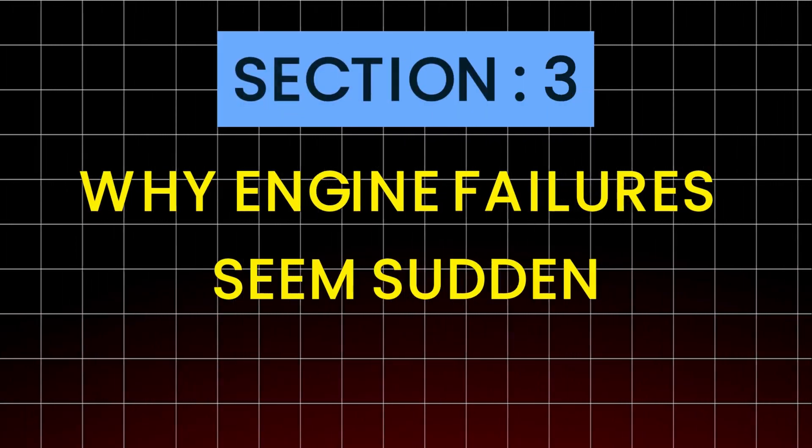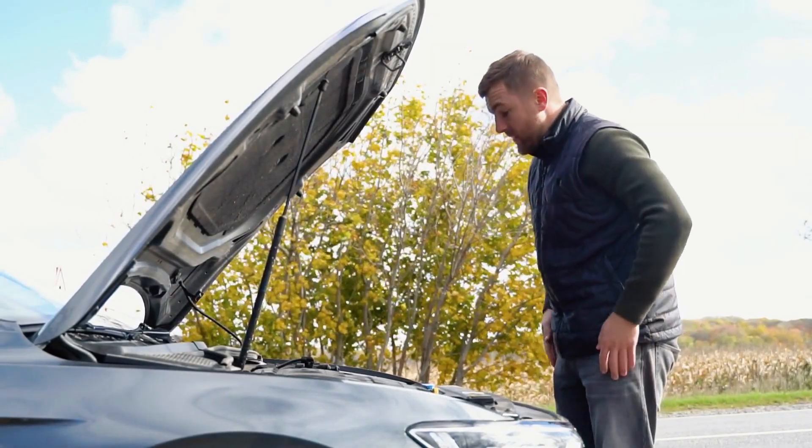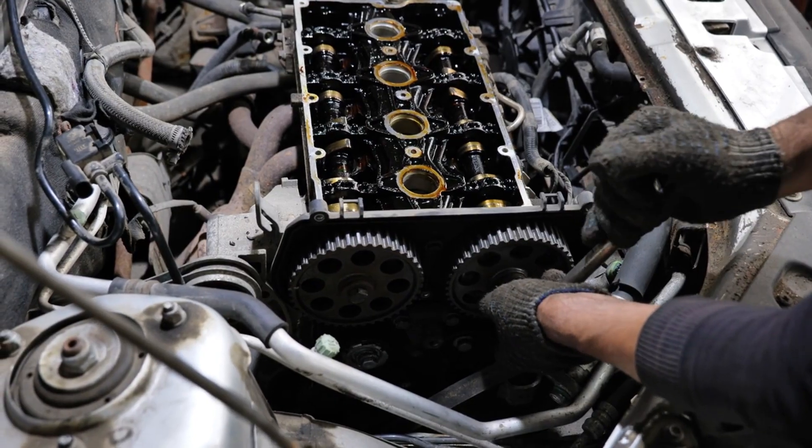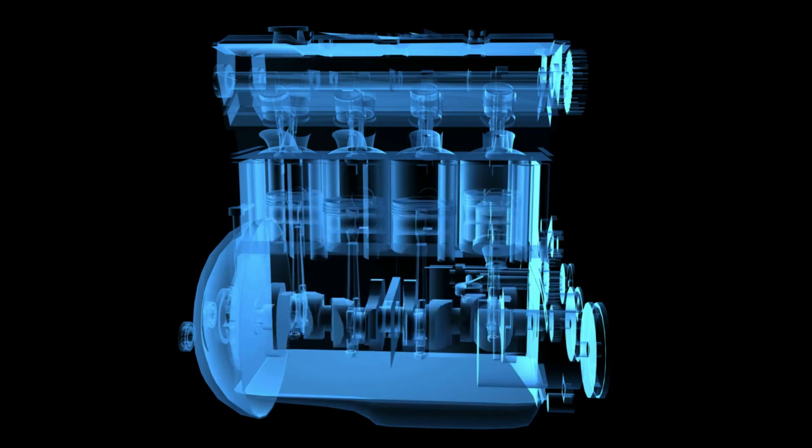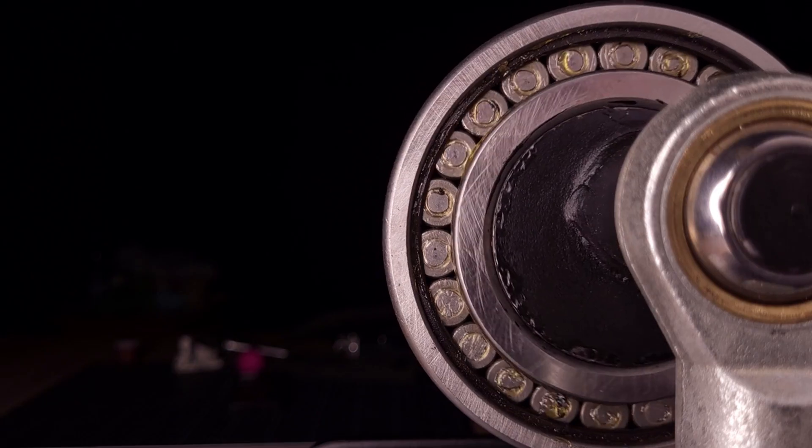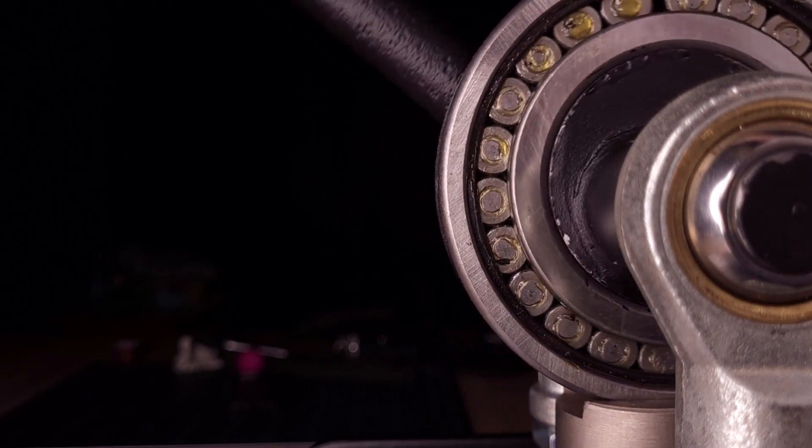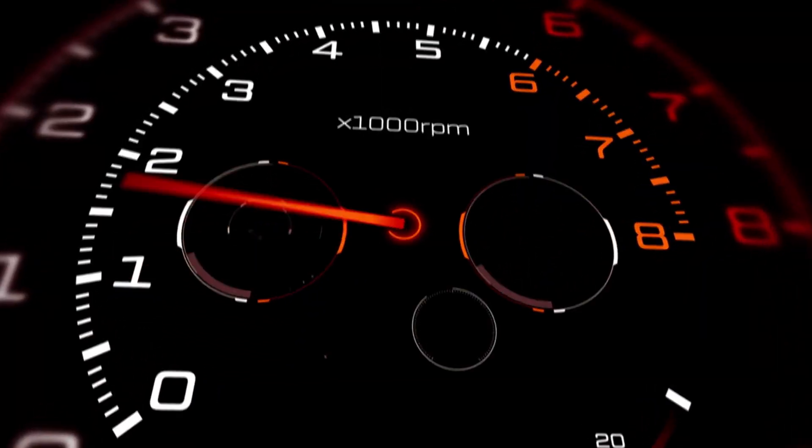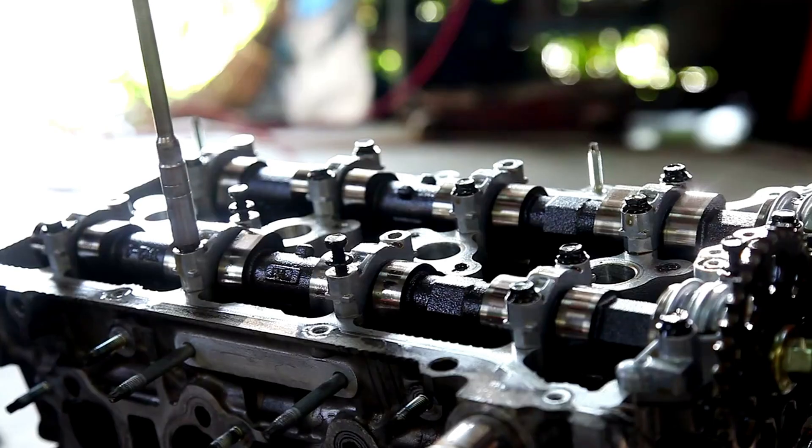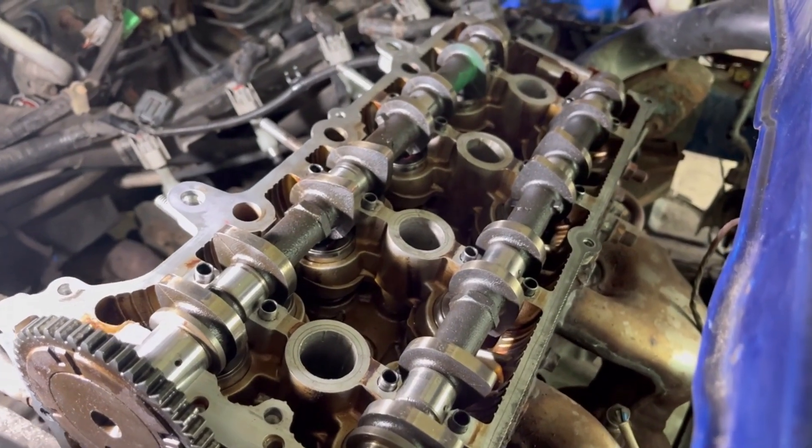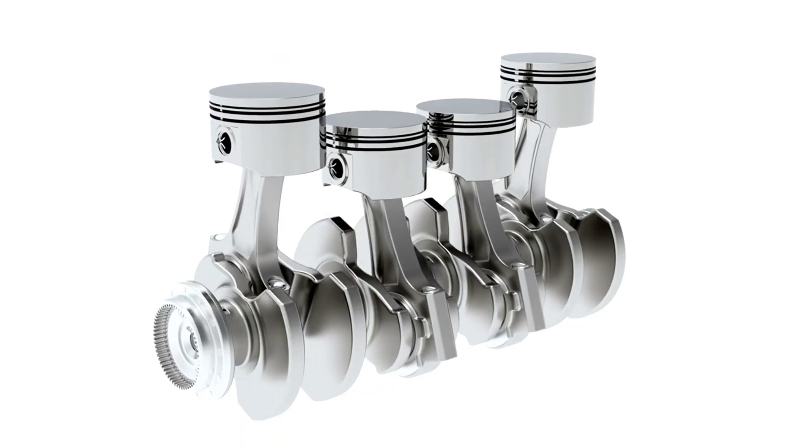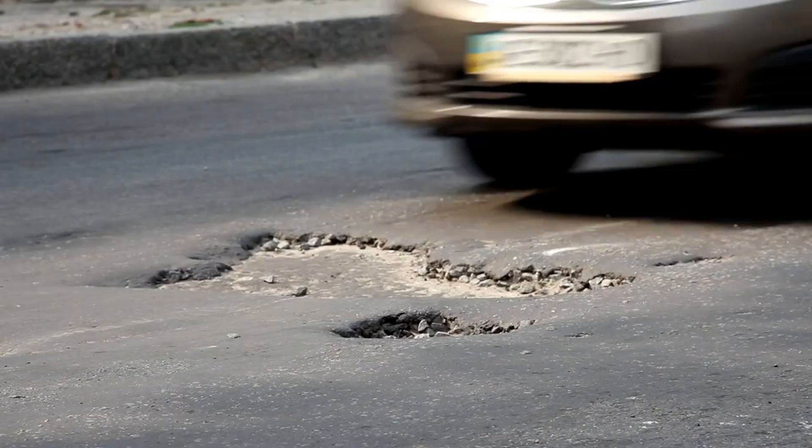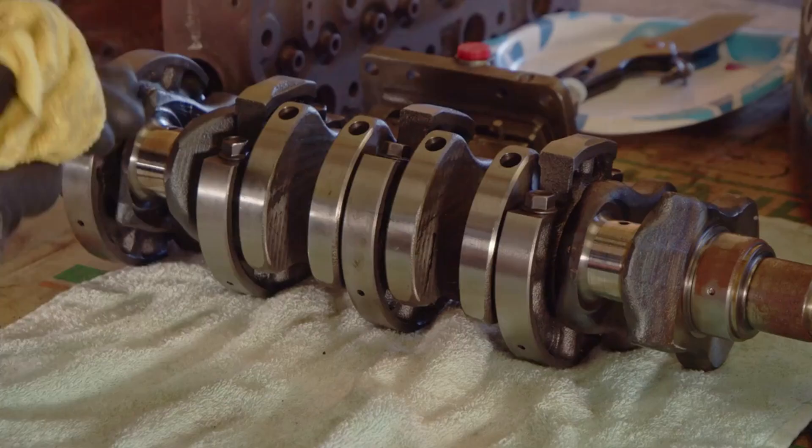Section 3: Why Engine Failures Seem Sudden. When an engine finally fails, people almost always say the same thing: 'It just happened out of nowhere.' But in reality, it almost never does. The failure process is slow, quiet, and completely predictable. Here's what actually happens: a hard, microscopic particle becomes trapped between two moving surfaces. Instead of load being spread evenly, that load concentrates into a tiny contact point. Material strength is exceeded. A subsurface crack forms. That crack grows with every heat cycle, with every acceleration, with every cold start. Eventually, the surface can no longer support the stress. And suddenly, a cam lobe wipes, a lifter collapses, a bearing spins. To the driver, it feels instant. To the engine, it's the final step of a long, slow process. Same physics that create potholes in winter roads. Different machine. Same failure mechanism.